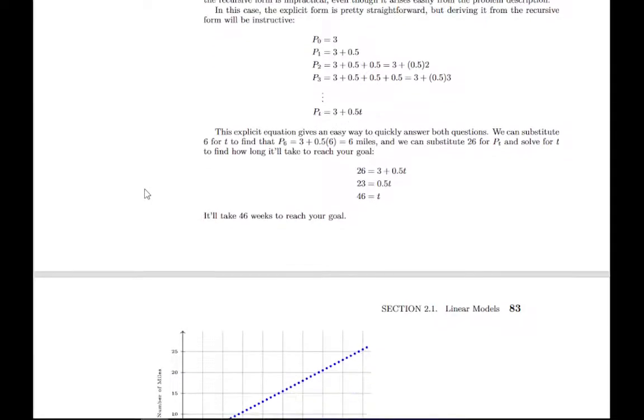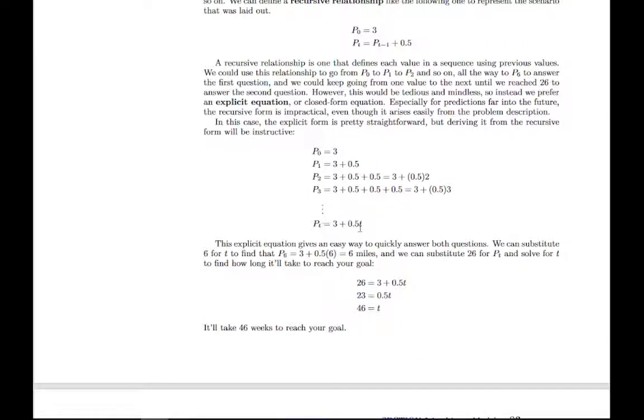The important piece is this final model where we have P with a little subscript of t equals 3 plus 0.5t. The subscript on t isn't really super important. It's just telling us that that's a population at some future time. The t over here is a time variable, and you can plug in any number of weeks you're interested in to figure out how far you'll be running at that future value.